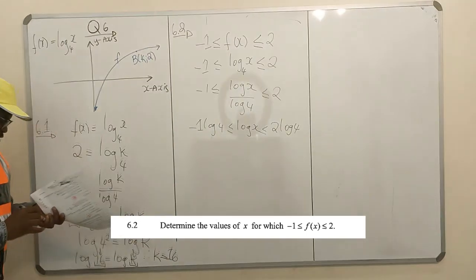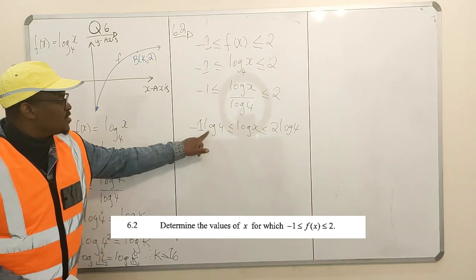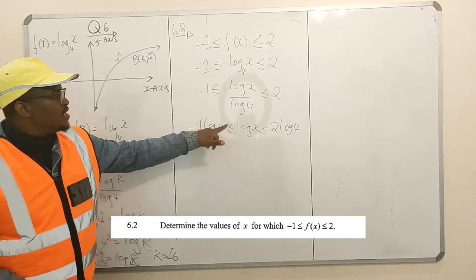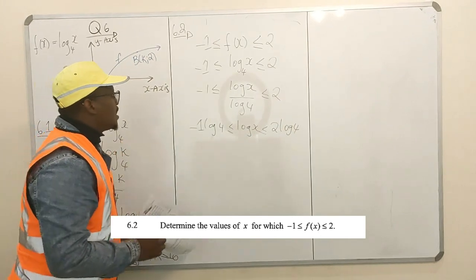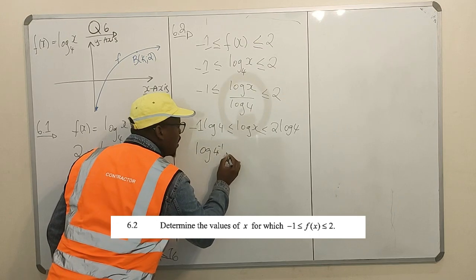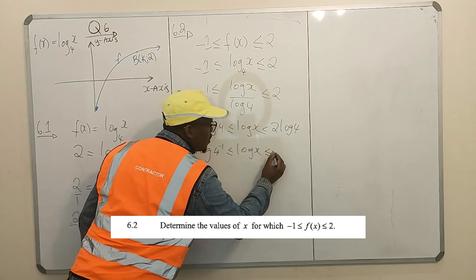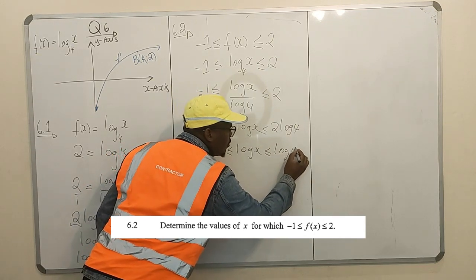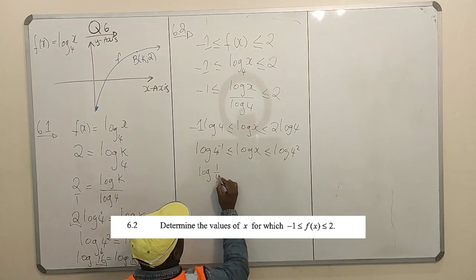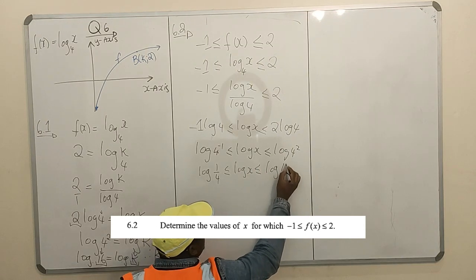Similar situation to this here. If you have this thing, remember, in front of this log of yours, which is this number here, was the power of whatever that is inside. Same applies to this side as well. That means you had log 4⁻¹ less than or equal to log x less than or equal to log 4².